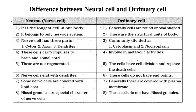The neuron cell is divided into two parts: the cytone, body, axon, and dendrites, while the ordinary cell is divided into cytoplasm and nucleoplasm. The neuron cell carries impulses to the brain and the spinal cord, while the ordinary cell is involved in metabolic activities. The nerve cells are not regenerated — this is the most important characteristic of the nerve cell — while other cells are involved in cell division and replacement of dead cells.